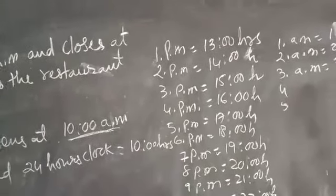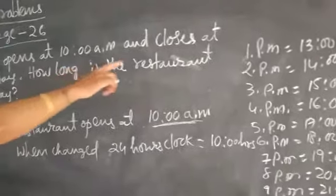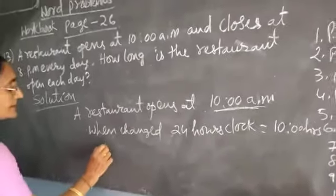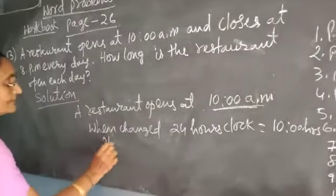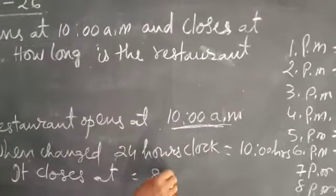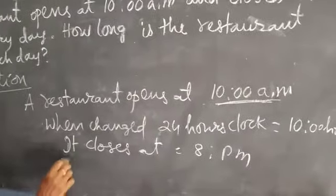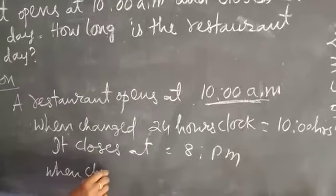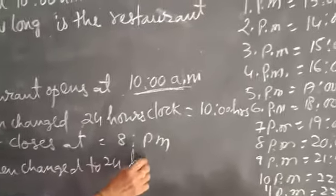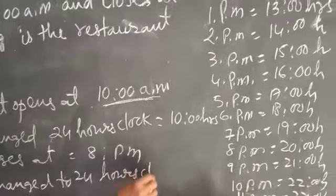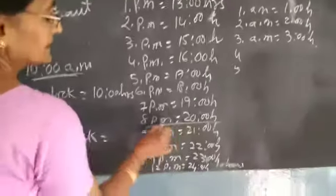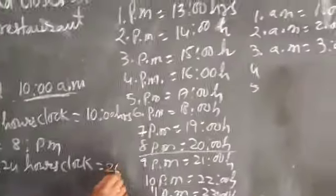Do you understand this? The restaurant closes at 8 pm everyday. So change 8 pm to 24-hour clock. 8 pm is 20 hours.